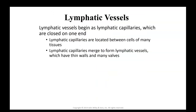With the lymphatic vessels, these begin as lymphatic capillaries, which are closed on one end. These are not open like blood capillaries, where blood comes in as an arteriole, goes through the capillary, and comes out as a venule. Lymphatic capillaries are closed at one side and flow towards the other direction. They are located between cells of many different tissues. Lymphatic capillaries emerge from lymphatic vessels, which have thin walls and many valves — similar to veins, which had valves whereas arteries did not. These valves keep lymph from flowing backwards and collecting in tissues.